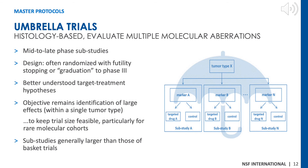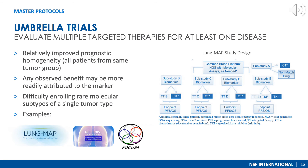Under umbrella trials, different targeted agents are tested on a single tumor type; they are commonly used as mid-to-late phase studies. One advantage is that umbrella trials make it easier for more treatments to be tested efficiently, and they allow meaningful conclusions specific to tumor type, reducing the chance of tumor heterogeneity issues. However, a great disadvantage is overall trial feasibility, particularly within rare diseases.